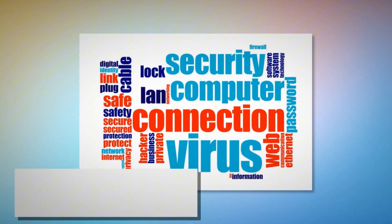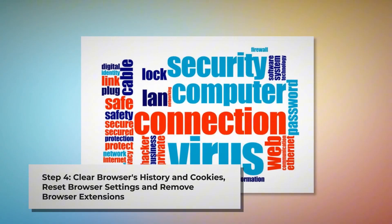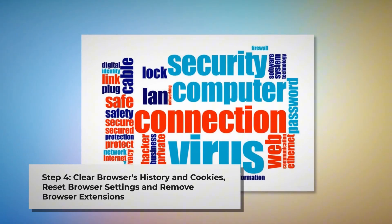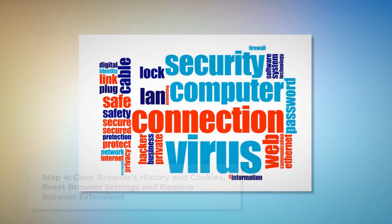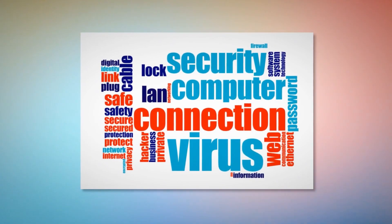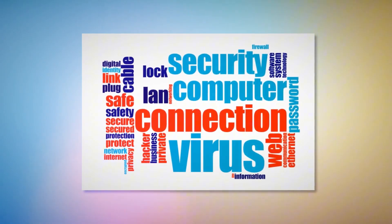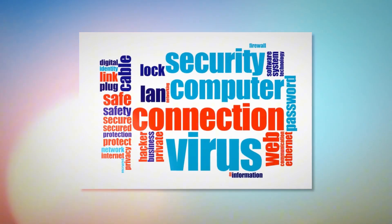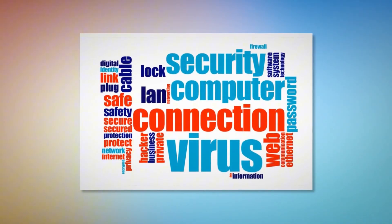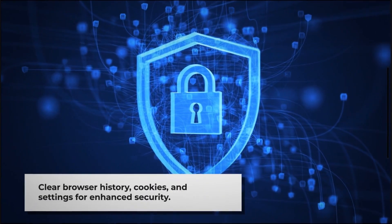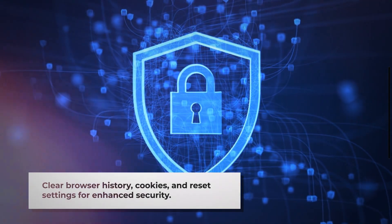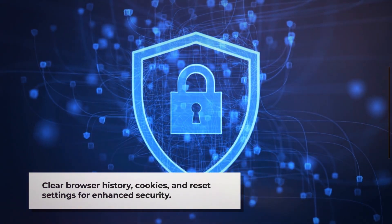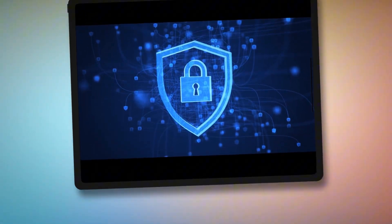Step 4: Clear browser history and cookies. Reset browser settings and remove or disable unknown browser extensions to be safe from adware. Once you delete the harmful files as mentioned in Step 3, you should delete malicious or unknown extensions from your browsers like Safari, Chrome, Firefox, Opera, and so on, whichever you are or were using. You should also delete browser history and cookies from your browser, and reset your browser. Note: before you reset your browser settings, it is always a good idea to back up your bookmarks.